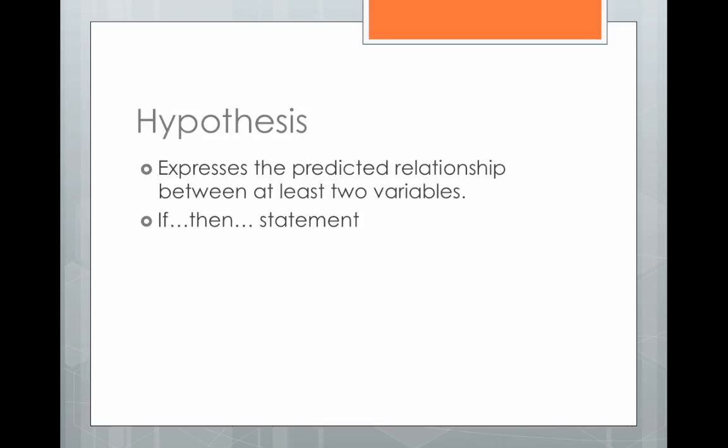We have variables — things that can vary from unit to unit — and one of the things we try to do in statistics is understand the relationship between different variables. One way to express that relationship is through a hypothesis. A hypothesis expresses what you predict the relationship is between at least two variables. In this class, we're going to stick to a simple if-then statement: if something happens, then this will happen — if variable, then variable.